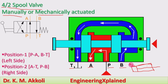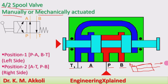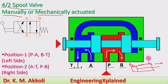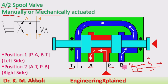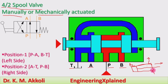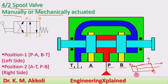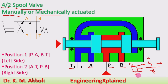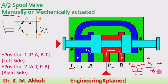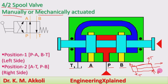During the working stroke — the extension stroke — fluid flows to the piston side while fluid on the rod end side flows back. Whatever fluid is on the piston side moves back to the tank. The pump provides flow, and excess fluid goes to the tank. This is how the double acting cylinder operates.